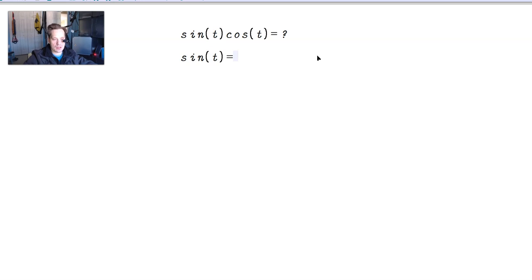So sine of t, we should remember that this is equivalent to something in exponential form. It's equal to e to the it plus e to the negative it, and then 2. And then we multiply this by the following: e to the it, and then minus e to the negative it, and then we divide this by 2i. So this part is equivalent to cosine. Let's do that. Put that over here. This is cosine of t right here. So this exponential expression that you see is equivalent to sine of t cosine of t.